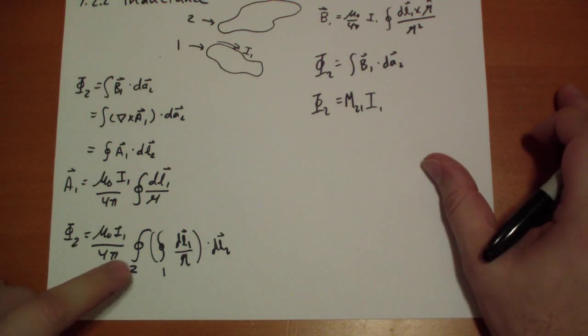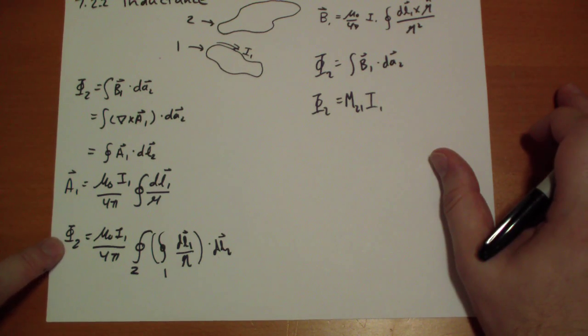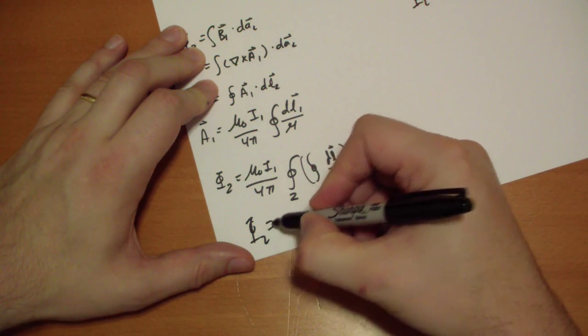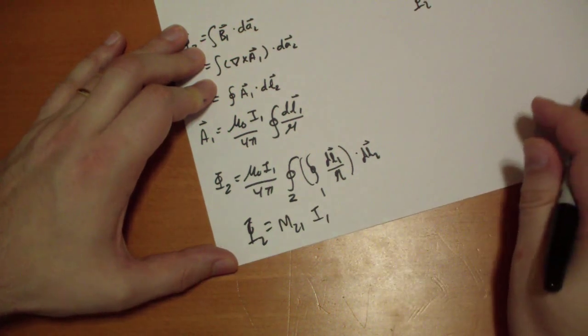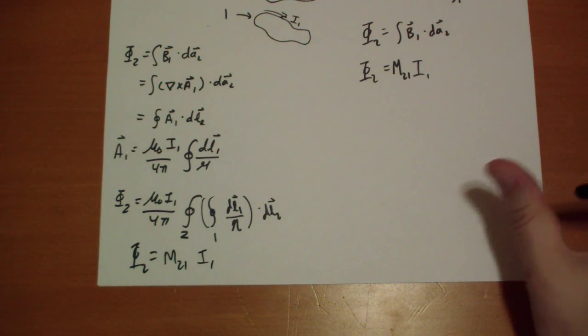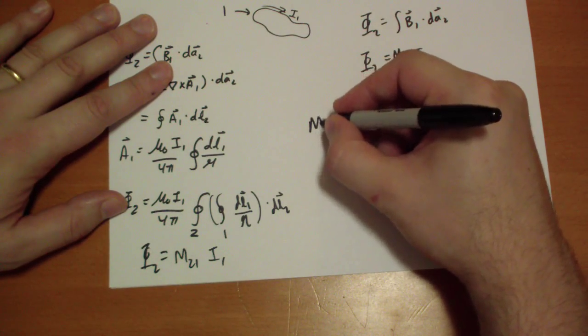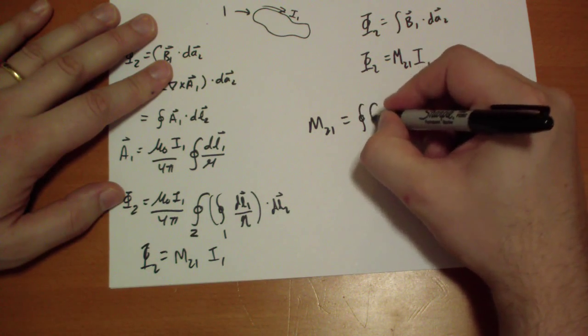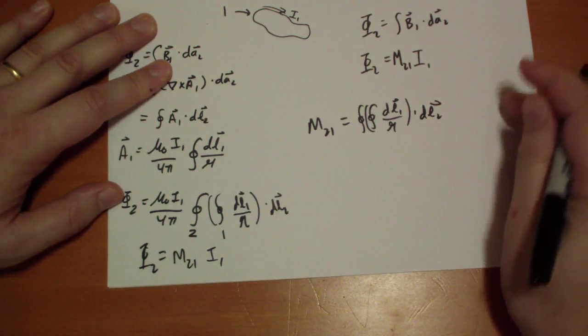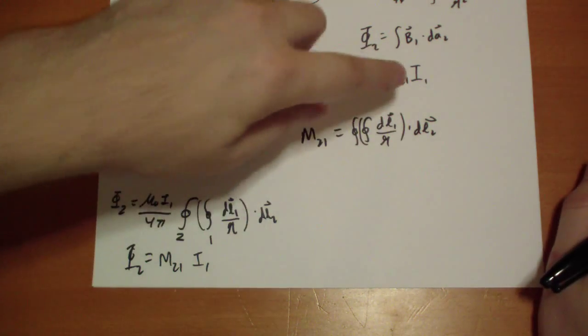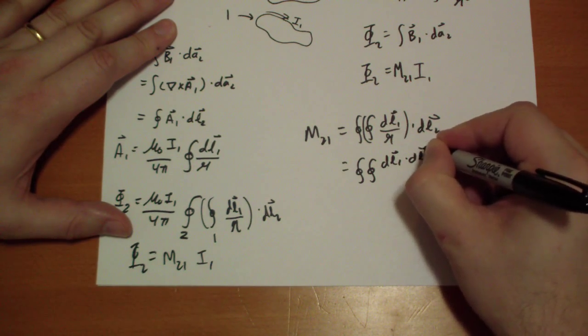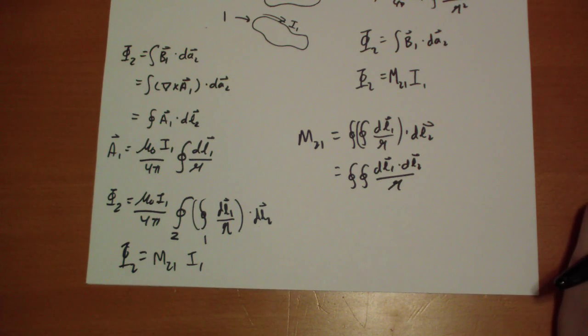We once again get this relationship between the flux and the current. So once again we get phi 2 is equal to something times the current in the first loop. And in this case, the M21 is equal to mu not over 4 pi, and this integral right here that depends only on geometry. This is the Neumann formula. It looks like this: M21 is going to be equal to the double closed integral over the two loops of one of the loops, and then that is dotted with the other loop. This is not a fun integral to solve.